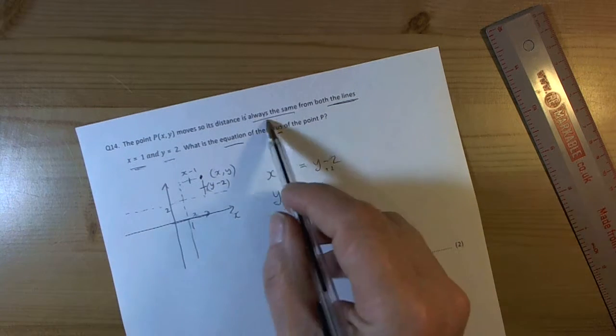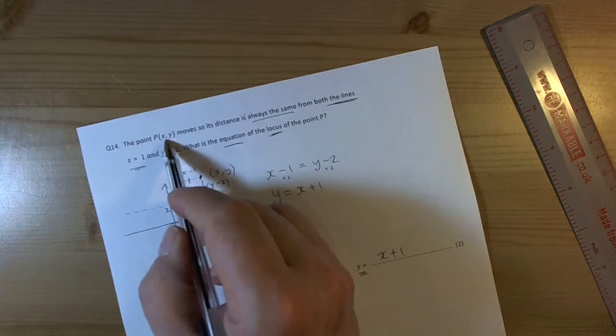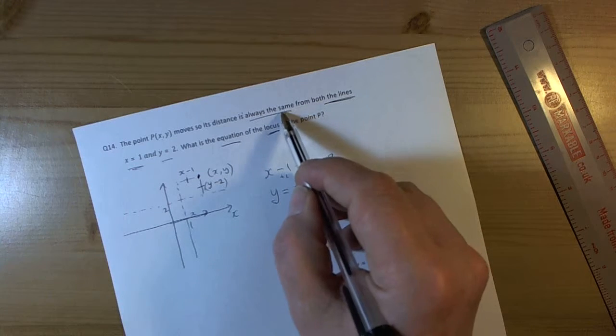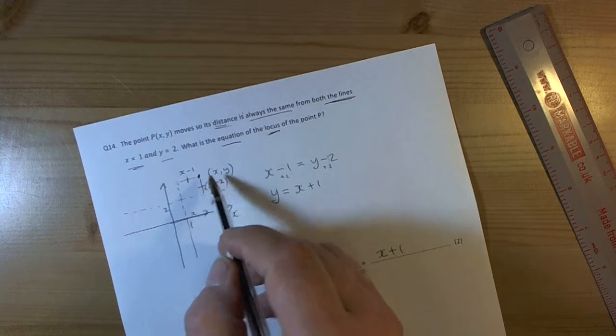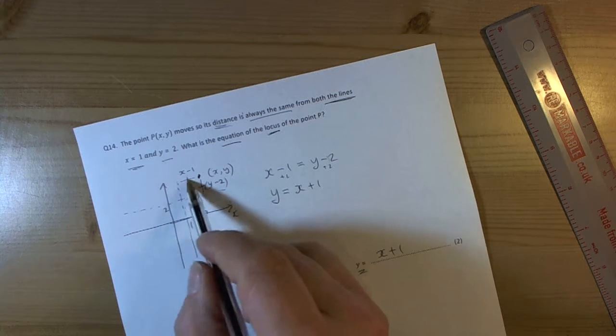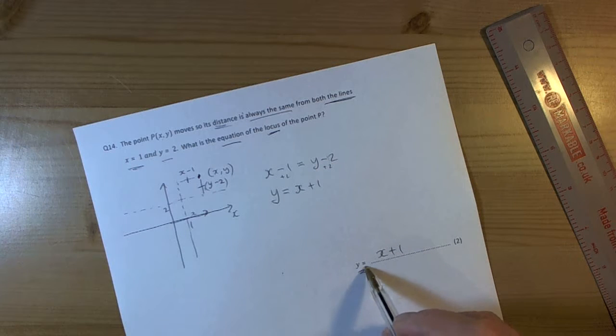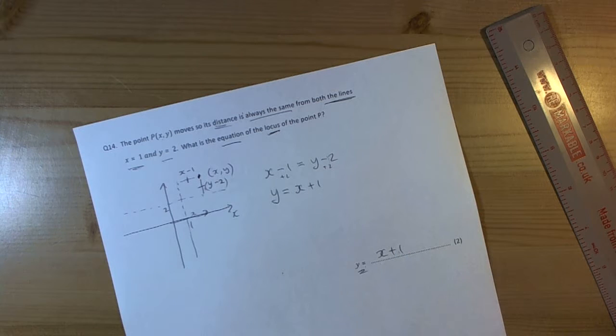So the standard thing to do with these kind of questions is when it talks about the locus of a point and the general point P is x, y, it's moving to some given rules. Look for the rules. Well it's telling me that the distances are always the same. So I can work out the distance of that, I can work out the distance of that. Because they're the same, I can make them equal to each other. Then because the question wants the equation y equals, rearrange it to be y equals. So that's an example of finding the equation of the locus of a point moving.